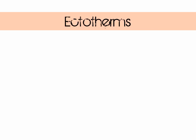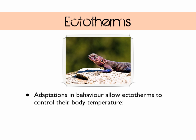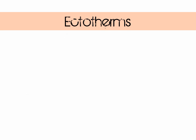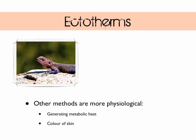Let's look at ectotherms in some detail. They exhibit quite a few behavioural adaptations that allow them to control their body temperature. They bask in the sun, take shelter to cool off, and press their bodies into the ground either to gain heat from hot rocks or to lose it to cool ones. Ectotherms also display physiological methods for controlling body temperature — they generate some heat metabolically, just not that much. The colour of the skin is interesting too: darker colours absorb more heat than lighter colours, so you tend to find darker lizards in cooler locations.